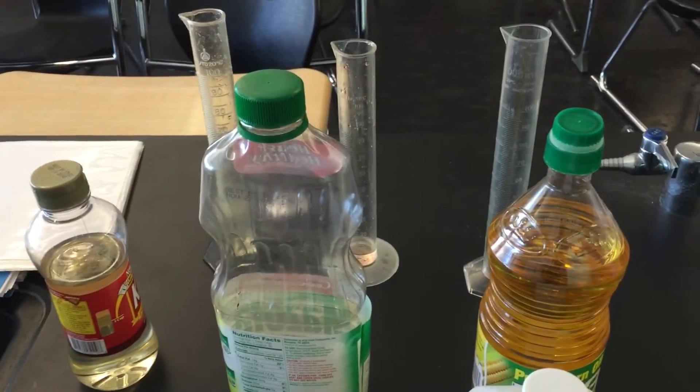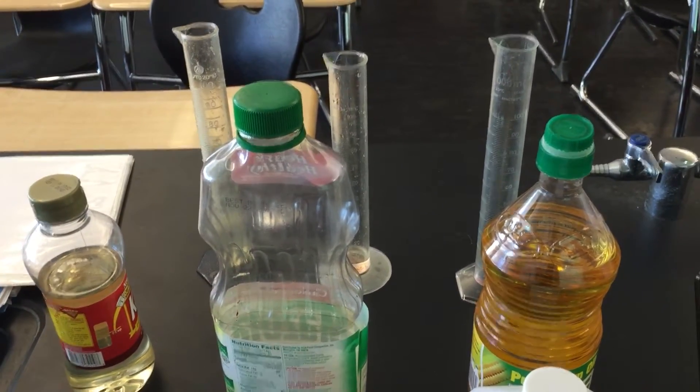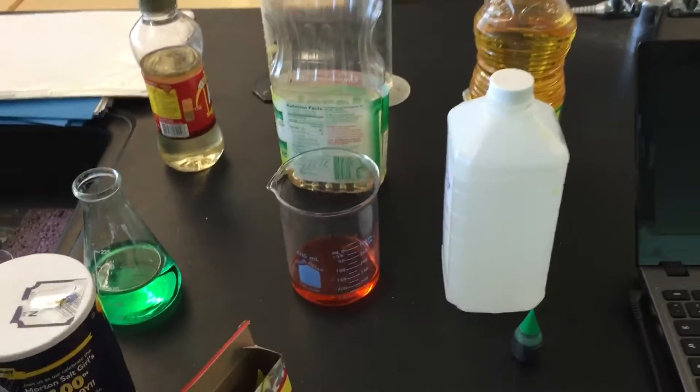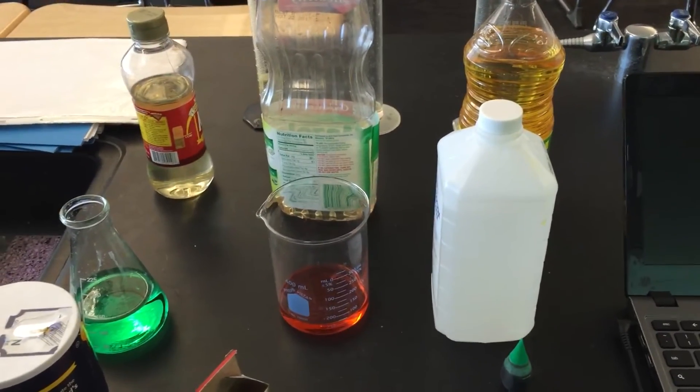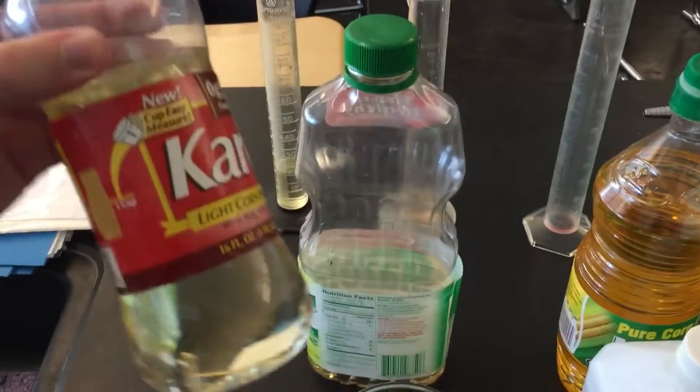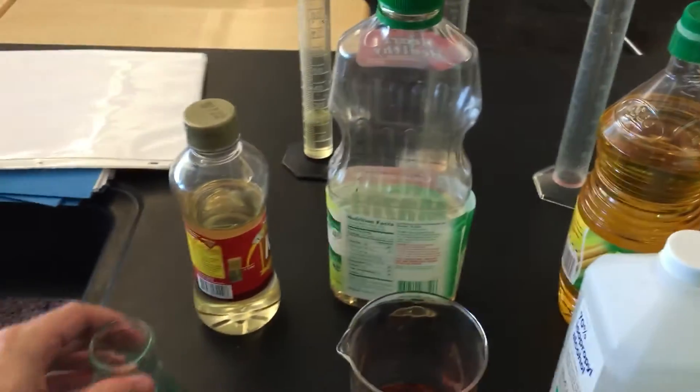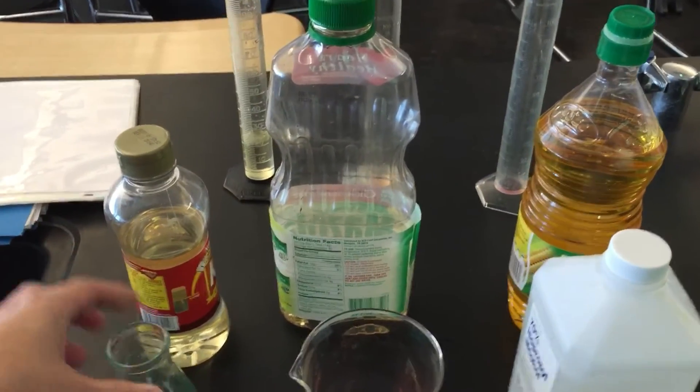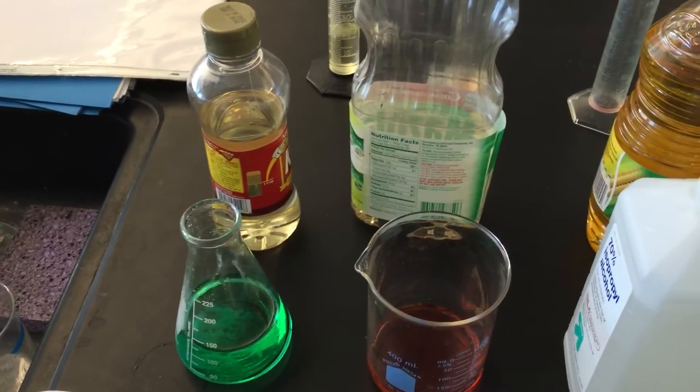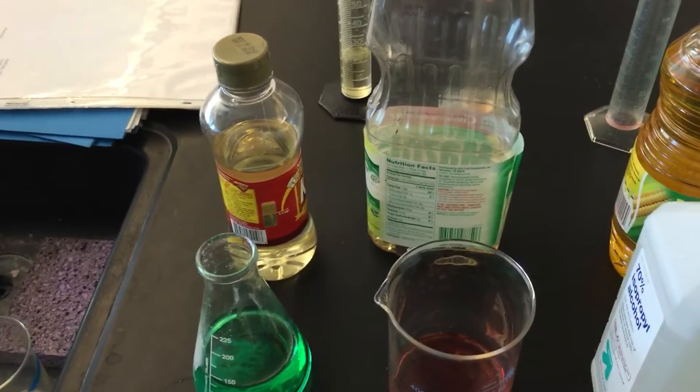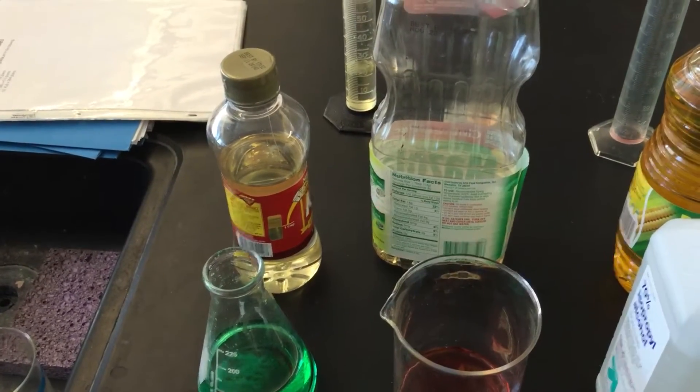The first thing that you're going to notice is that you have a couple of different mixtures on this table and we're going to be mixing them together. For the first one we're going to be mixing light corn syrup, which is right here, with salt water which I've dyed green. Before we mix them together though, predict which one you think is going to be sinking. The most viscous, the one with the highest density.